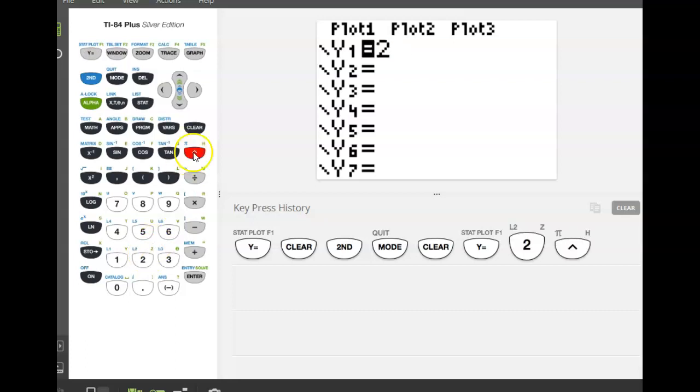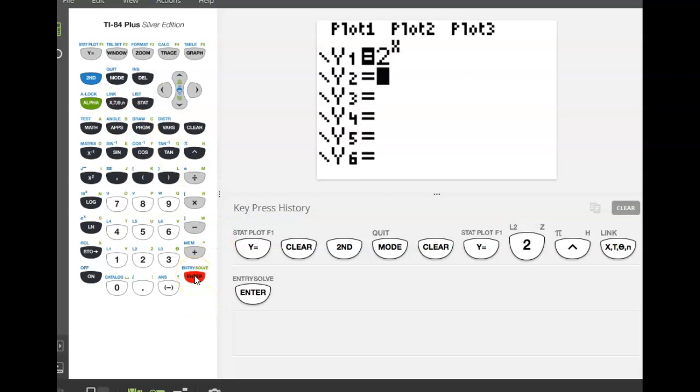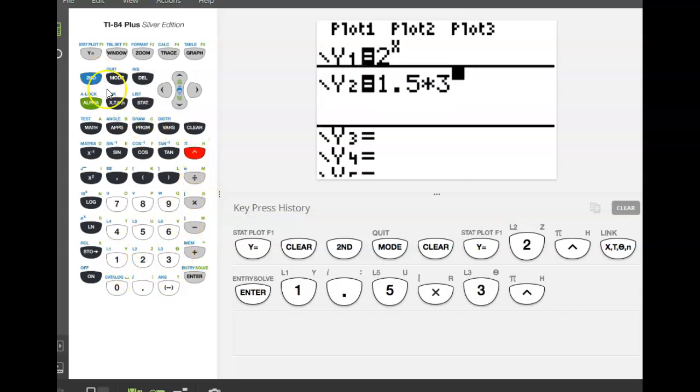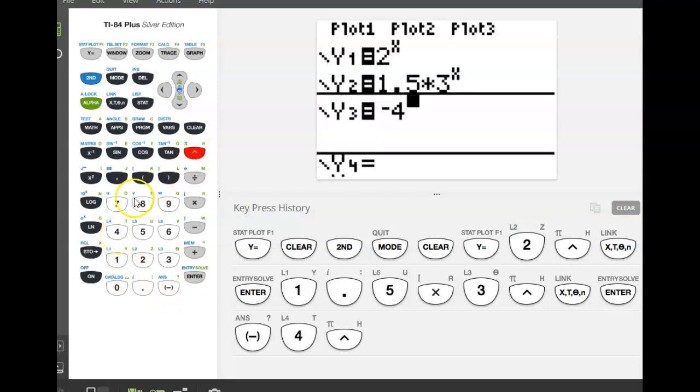I'm going to type in function 1, function 2, and function 3 all at the same time. So I'm going to do 2 to the x power, x is right here next to the alpha key. Then I'm going to do 1.5, and that's times 3 to the x. Now be careful, don't do the minus sign instead of a negative. We got negative 4 to the x power.